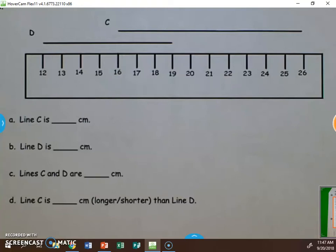One of the next strategies that we talk about with measurement is when a line is in the middle of a ruler, or you can also call it a broken ruler strategy.